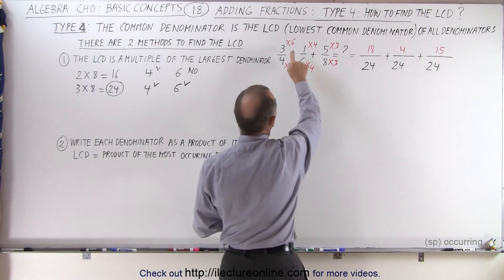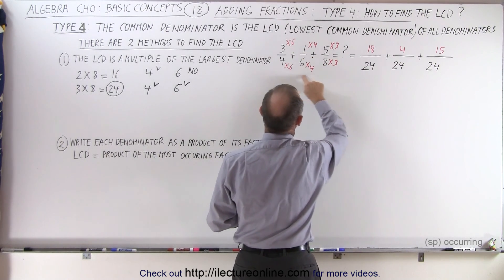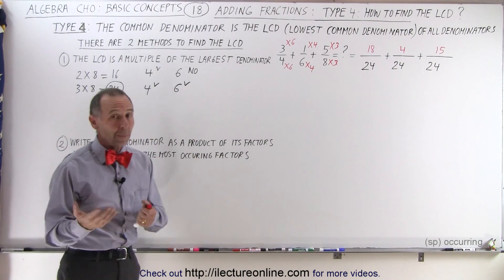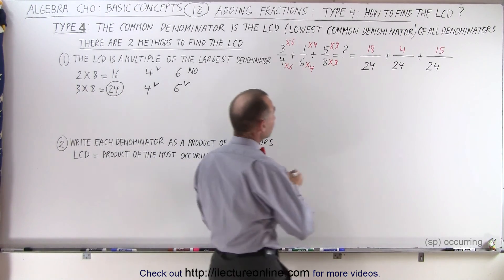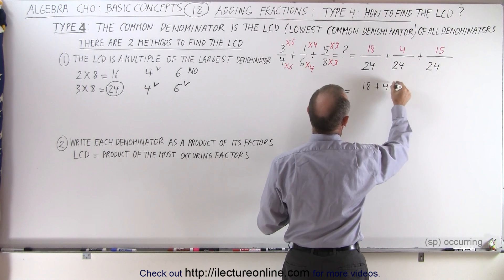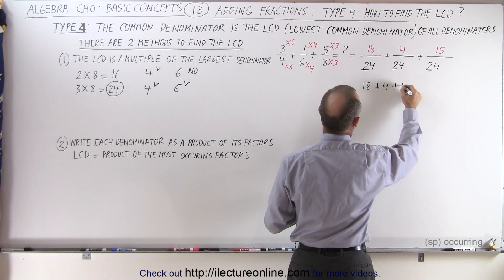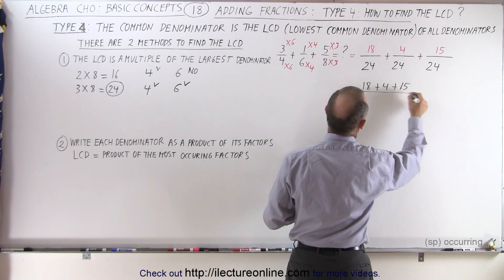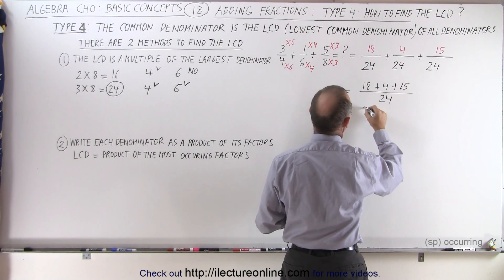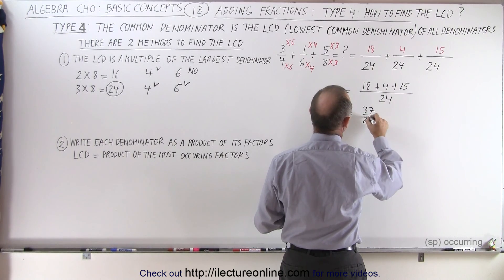We have to multiply the numerators by the same factor as we did the denominator to get 24 as a common denominator. And now we can solve that fraction. So this is equal to 18 plus 4 plus 15. That should be a 15 here. All divided over a common denominator of 24, which is equal to 37 over 24.